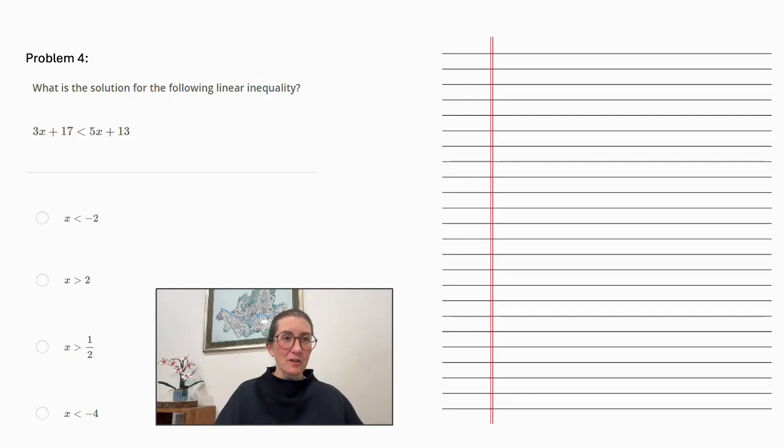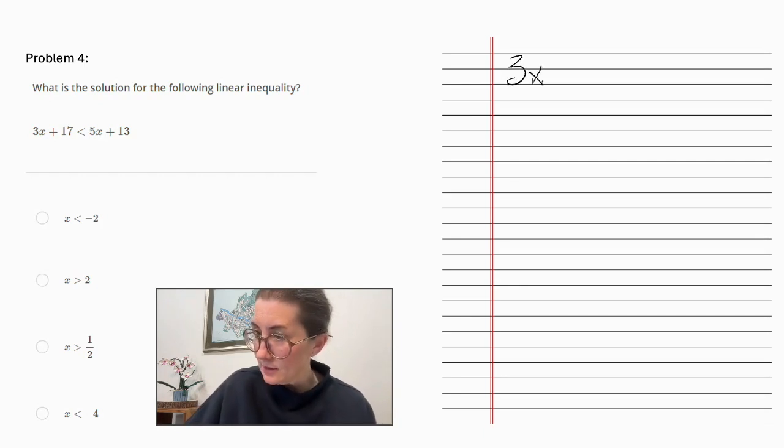Problem number 4. What is the solution for the following linear inequality? 3x plus 17 is less than 5x plus 13. Let's begin.